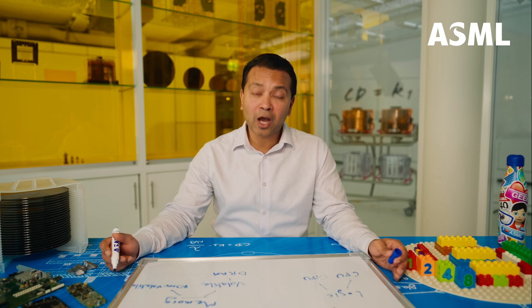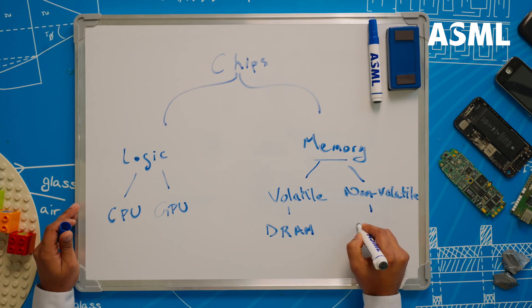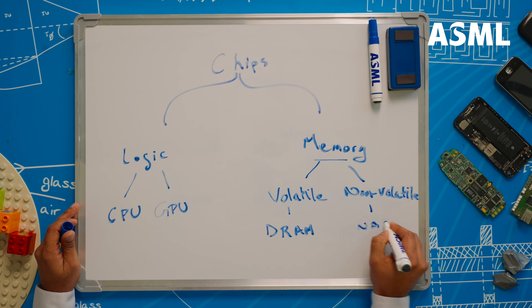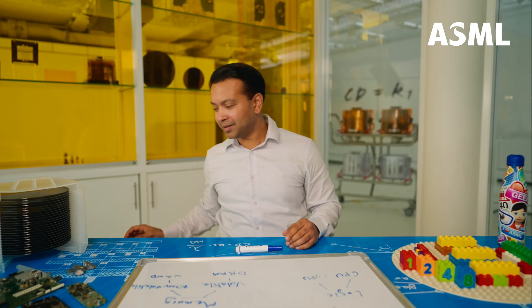Then, there are non-volatile memory chips. These can save data even when the device is turned off. The most common type of non-volatile memory is NAND flash, which stores your photos and documents on your device. Handy, right?